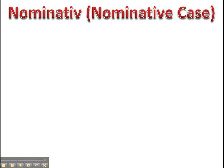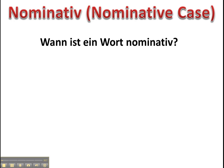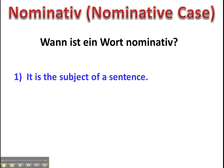We will start with the nominative case in German and being able to recognize it. Wann ist ein Wort Nominativ? When is the word nominative case? When it is the subject of a sentence, or the noun appears after a conjugation of the verb sein. This could be bin, bist, ist, sind, seit, war, warst, wart oder waren.